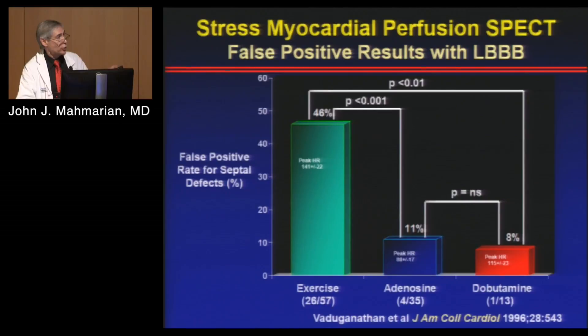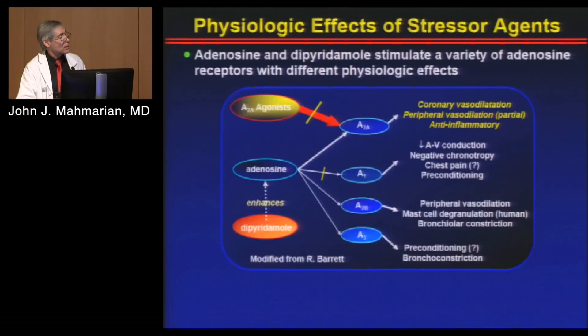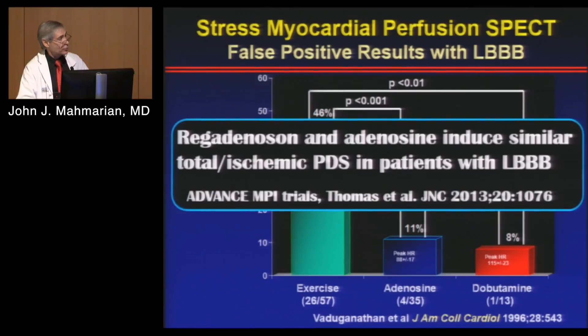We did a study looking at exercise stress in patients with left bundle branch block where almost half had false positive results. With pharmacologic agents — adenosine and dobutamine — it's much less. That's why pharmacologic agents are used in patients with left bundle branch block for cardiac imaging. This is also true for regadenosine — published data showed that with left bundle branch block, regadenosine is the way to go.